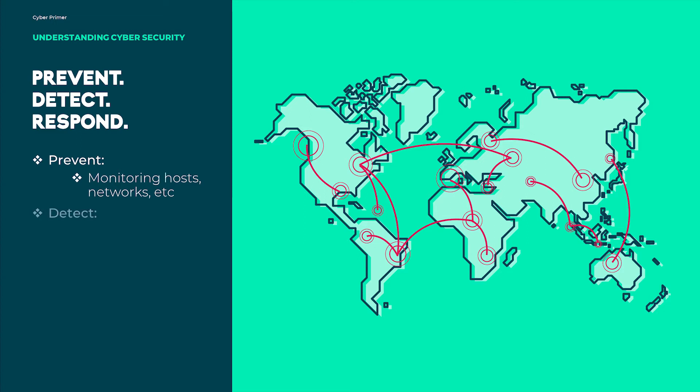Then, detecting an attack — finding a compromised machine or system — and responding to an attack with an already established plan, by knowing how to quarantine an infected machine or subnet, perform a post-mortem in order to understand the nature of the infection, rule out the infection of other machines, and recover functionality of those systems.